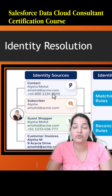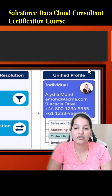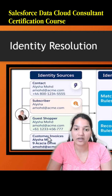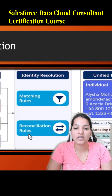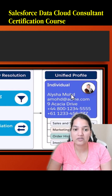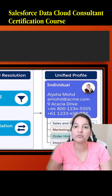When matching rules are applied, they identify it's the same person, and this is how the unified profile for that individual is created. All four records get consolidated into one record with the help of matching rules and reconciliation rules. The unified profile shows the address, email, name, order history, and all related data — this is how a unified profile would be created.